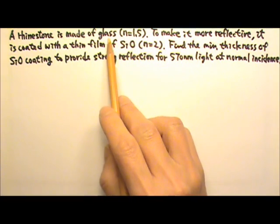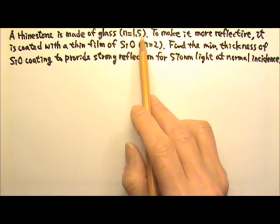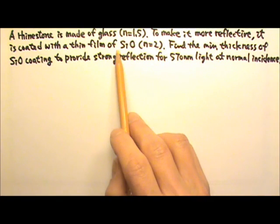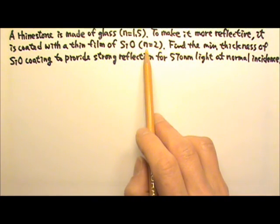A rhinestone is made of glass with an index of refraction of 1.5. To make it more reflective, it is coated with a thin film of silicon monoxide with an index of refraction of 2.